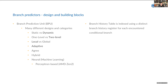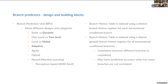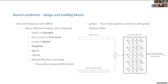Two-level adaptive branch predictors can be local or global. In the local variant, the branch history table is indexed using a distinct branch history register for each conditional branch — each branch has its own register. In the global variant, a shared global branch history register remembers information for all encountered conditional branches, which can be beneficial for programs with many correlated branches. An example of a global two-level adaptive predictor is the very popular gshare, where the global history register value is XOR'd with the branch's program counter value, and the result indexes the branch history table.